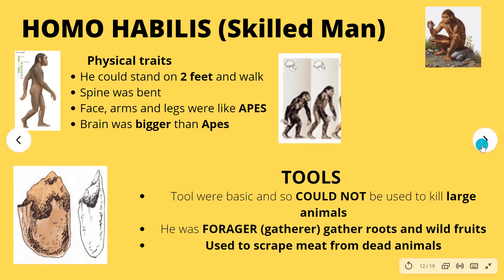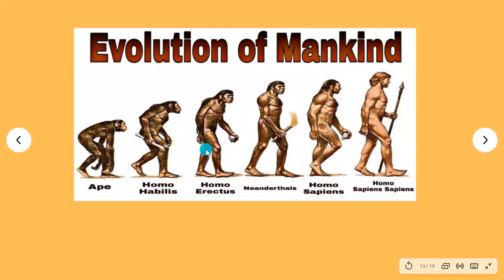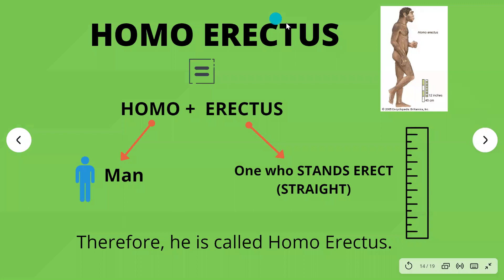Now we move to the next stage: Homo Erectus. Breaking it down — 'homo' means man and 'erectus' means one who stands erect, meaning straight. We saw that Homo Habilis had a bent spine, but this man, Homo Erectus, stands straight. That is exactly why he is called Homo Erectus — he could stand straight.